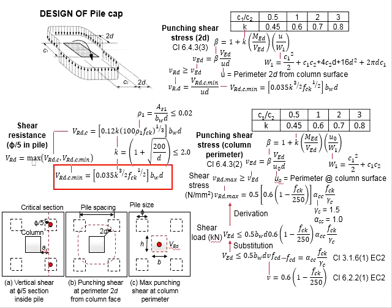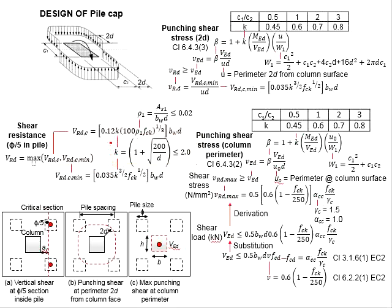VRd,c minimum has these equations where the K here is obtained from these equations as a function of d. The K here needs to be less than 2.0, and the b here is referring to the width of the pile cap, while d is the depth of the reinforcement bar.